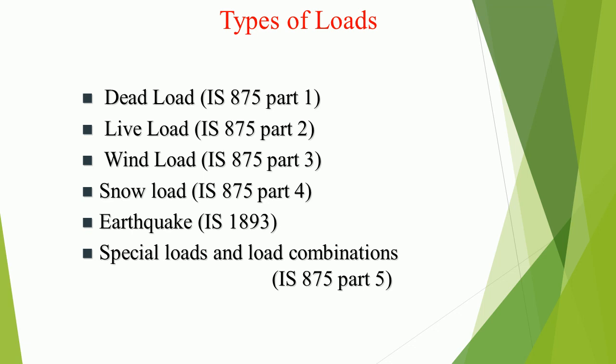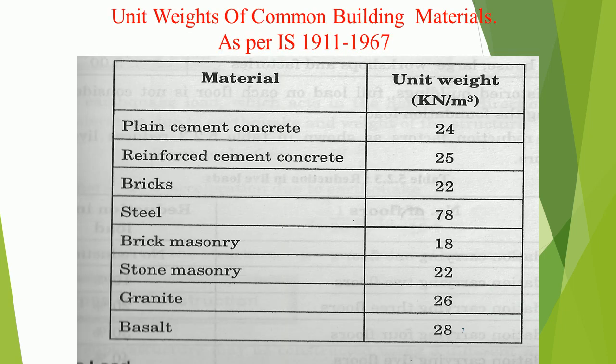Special loads and load combinations are covered under IS 875 Part 5. Unit weights of common building materials are specified as per IS 1911 to 1967.